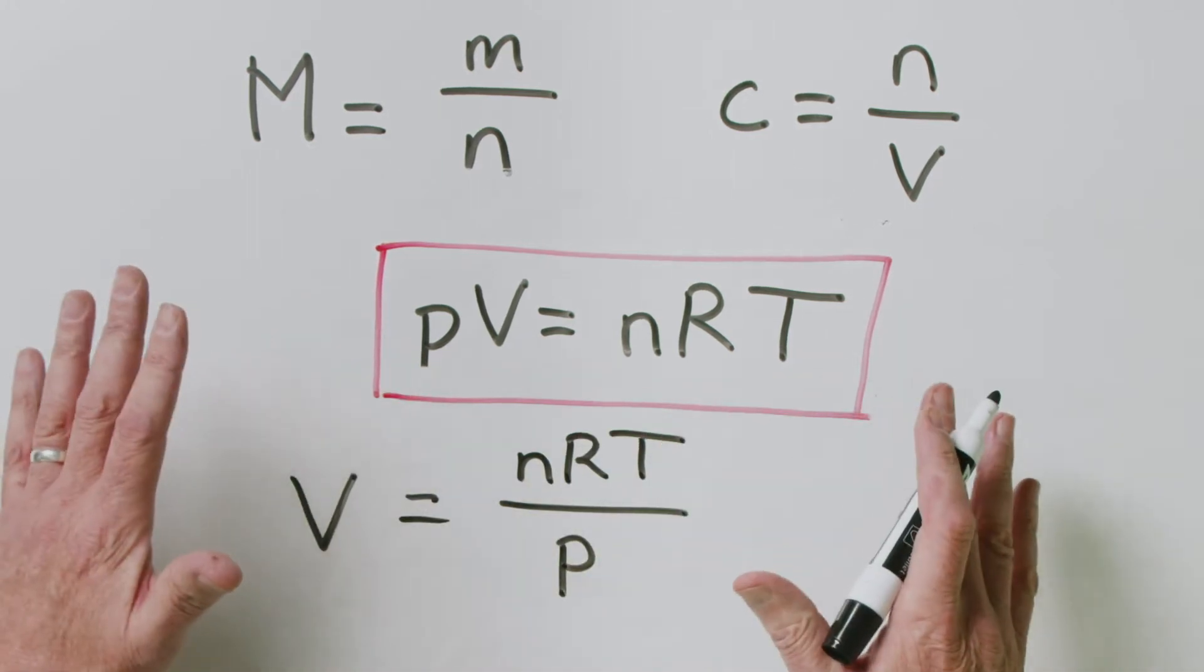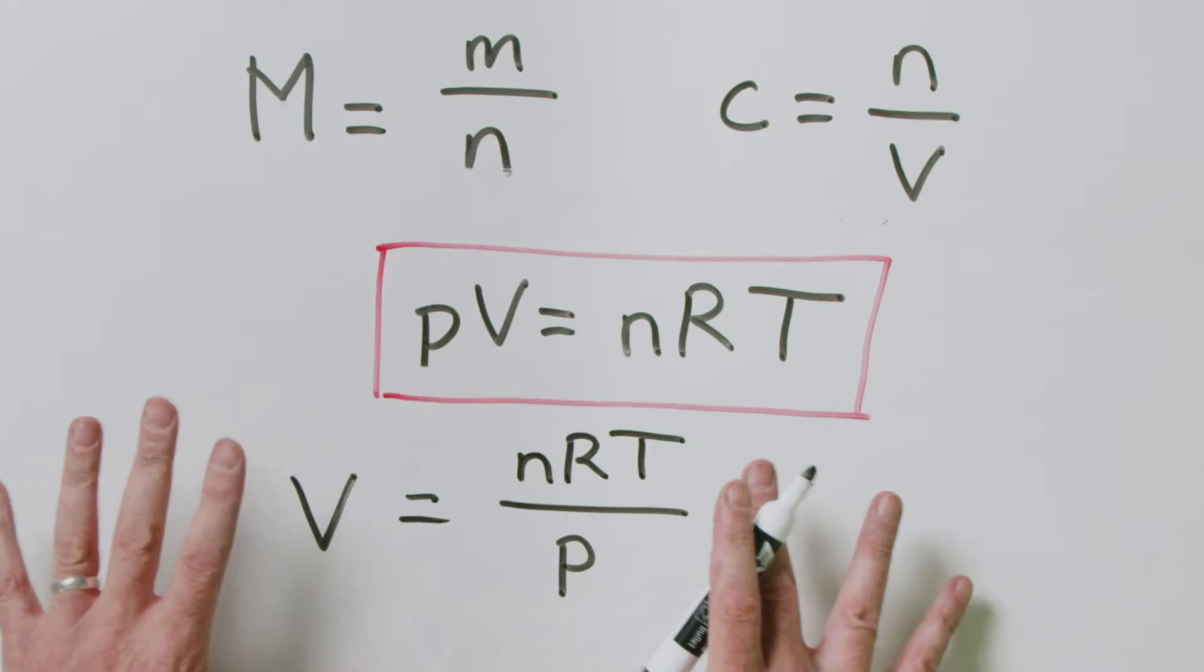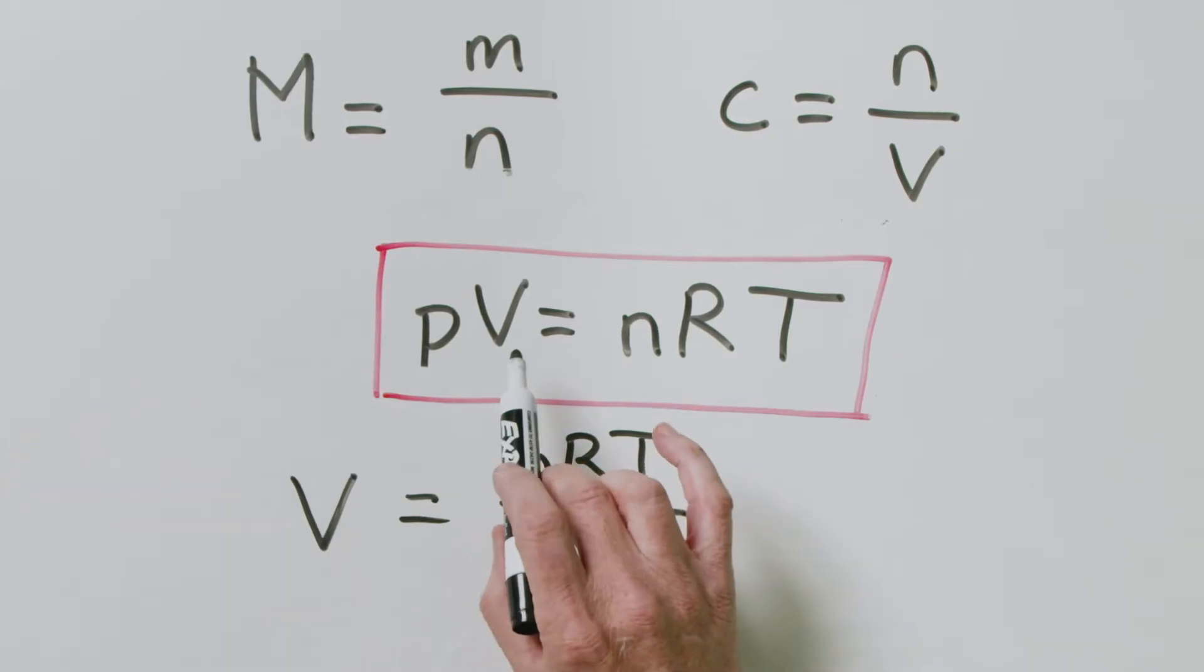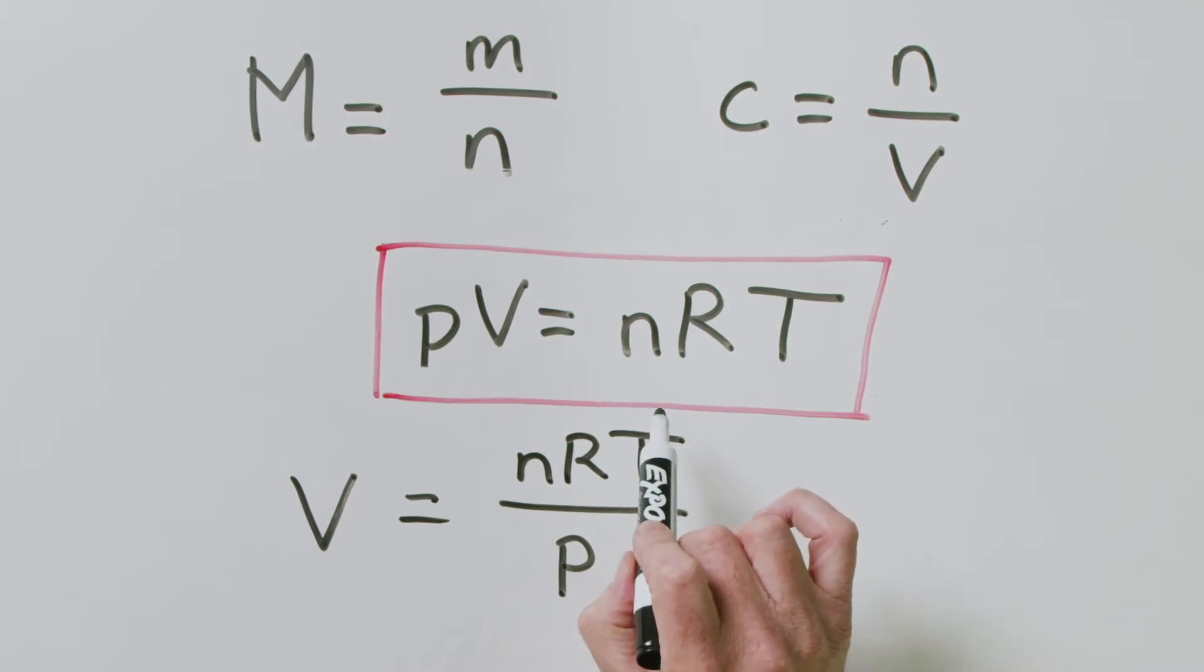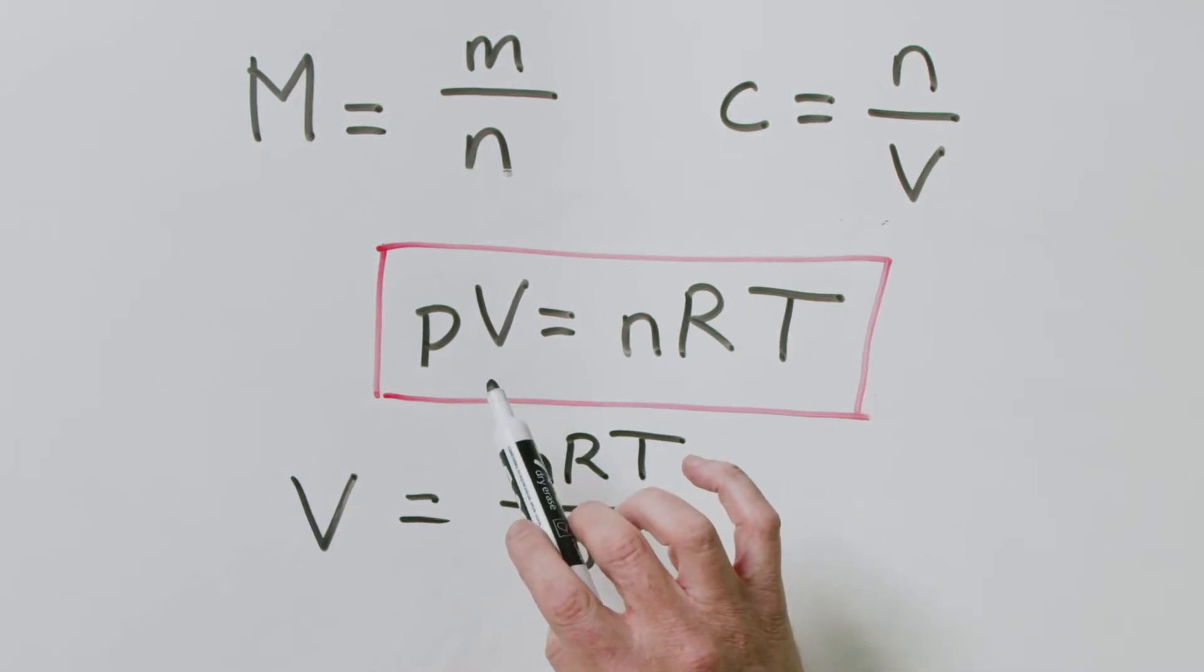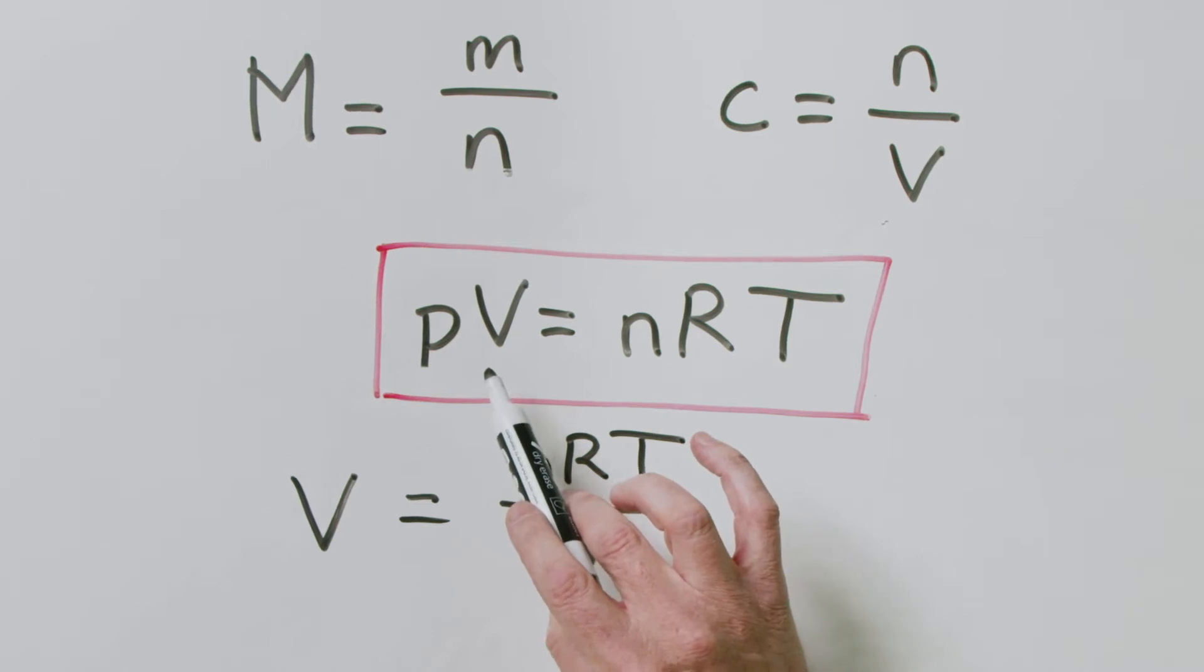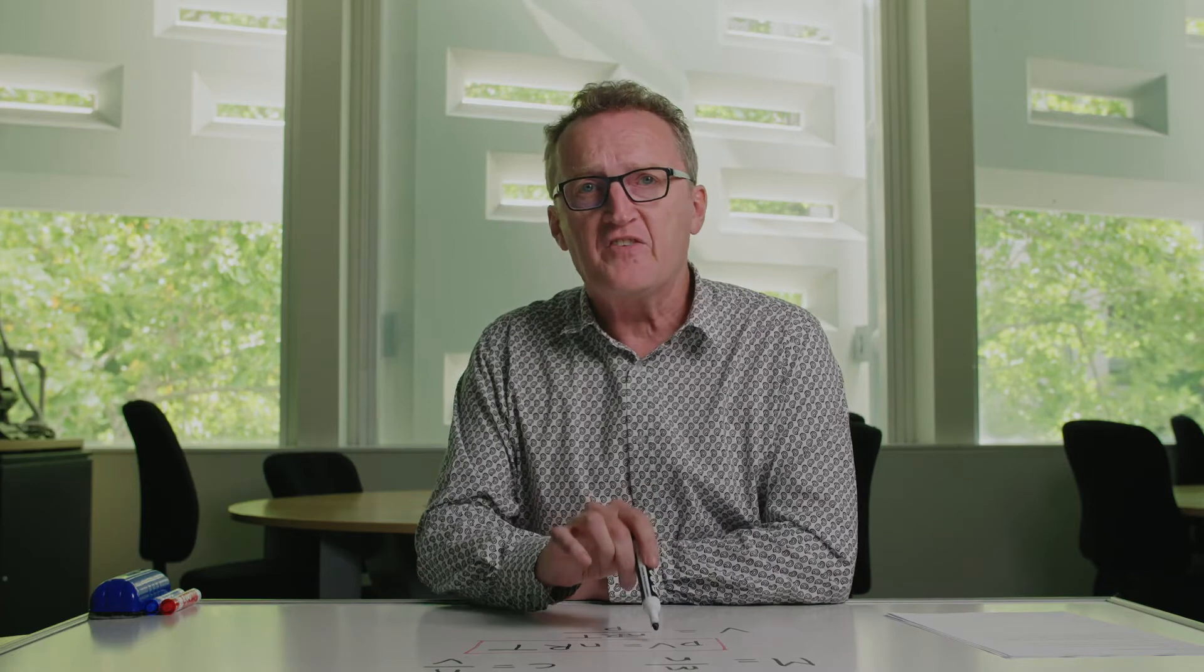The really important point about the ideal gas equation is that you need to use strict SI units. The major difference is the volume. When using strict SI units, you end up with a volume not in liters but in cubic meters, because strictly speaking the SI unit of volume is the cubic meter.